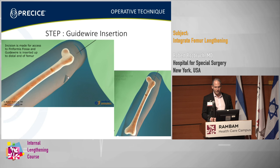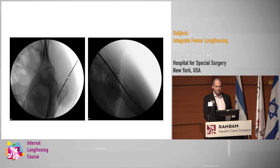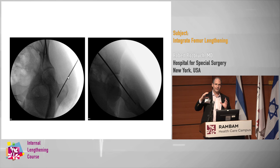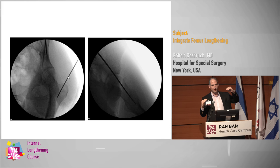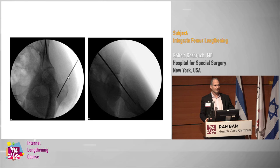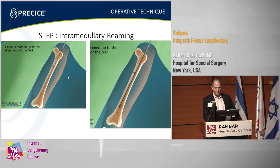The guide wire is then inserted into the proximal femur, whether it's the trochanter or the piriformis. If you have a bump under the buttock and the patient is tilted about 15 degrees, then when you come to a lateral or an x-ray just a little off the lateral, you get a very nice view of the proximal femur. So you don't need to use a fracture table for these cases.